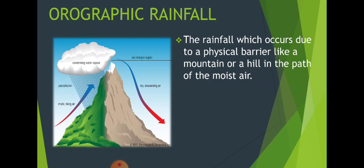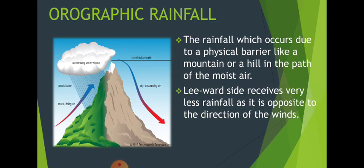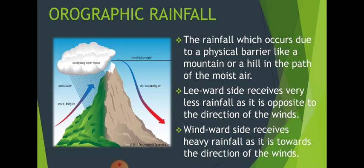The rainfall which occurs due to a physical barrier like a mountain or hill in the path of moist air is known as orographic rainfall. The leeward side and rain shadow area receive less rainfall, while the windward side receives heavy rainfall as it is towards the direction of winds. A good example from our country is Mumbai and Pune — Mumbai falls in the direction of monsoon winds and receives heavy rainfall, while Pune on the other side receives much less rainfall.